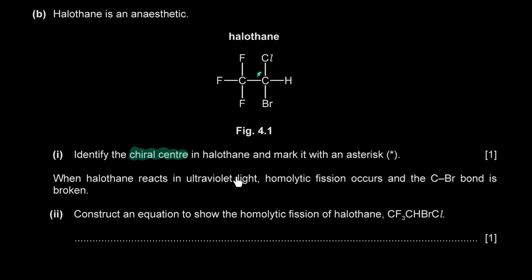When halothane reacts in ultraviolet light, homolytic fission occurs and the C–Br bond is broken. Construct an equation for the homolytic fission. In homolytic fission, one electron goes to bromine and one to carbon, forming radicals. So CF₃CHClBr → CF₃CHCl• + Br•. The C–Br bond breaks because it is the weakest bond — down the group, halogen size increases, bond length increases, and bond energy decreases.